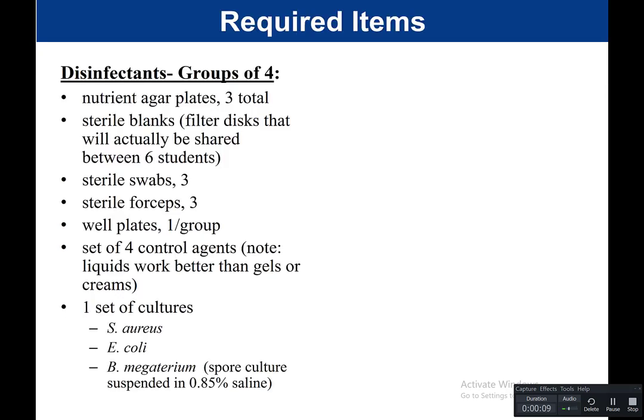We're going to start out with how we would set up this experiment. This would be done in groups of four. Per group of four, you would need three nutrient agar plates, sterile blanks — these little filter disks shared between six students — three sterile swabs, three sterile forceps, and a well plate, also called a depression plate, one per group.